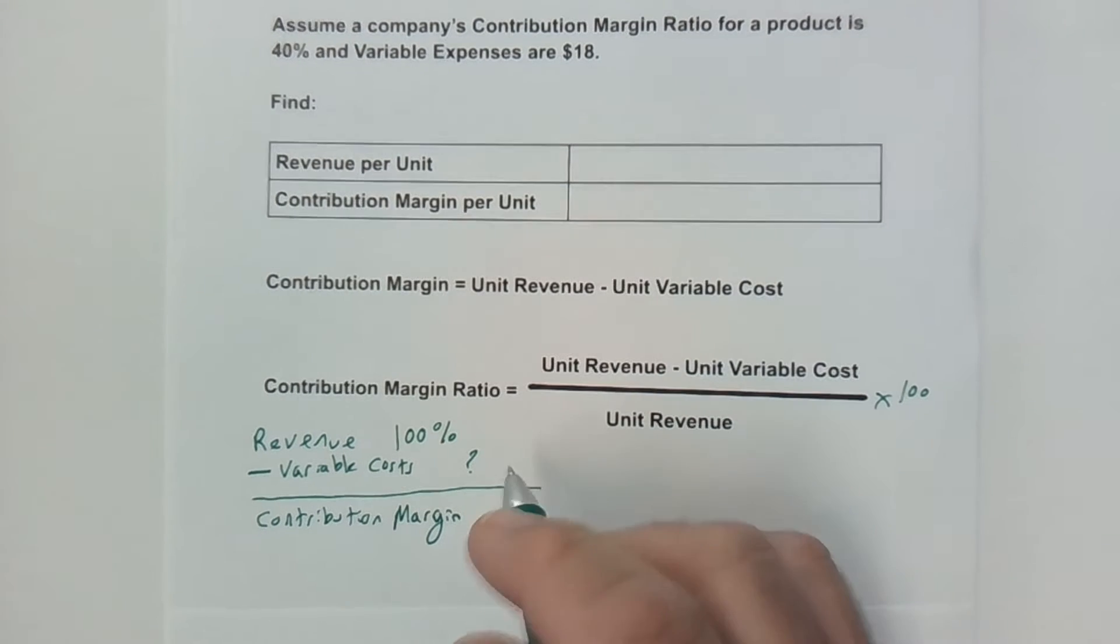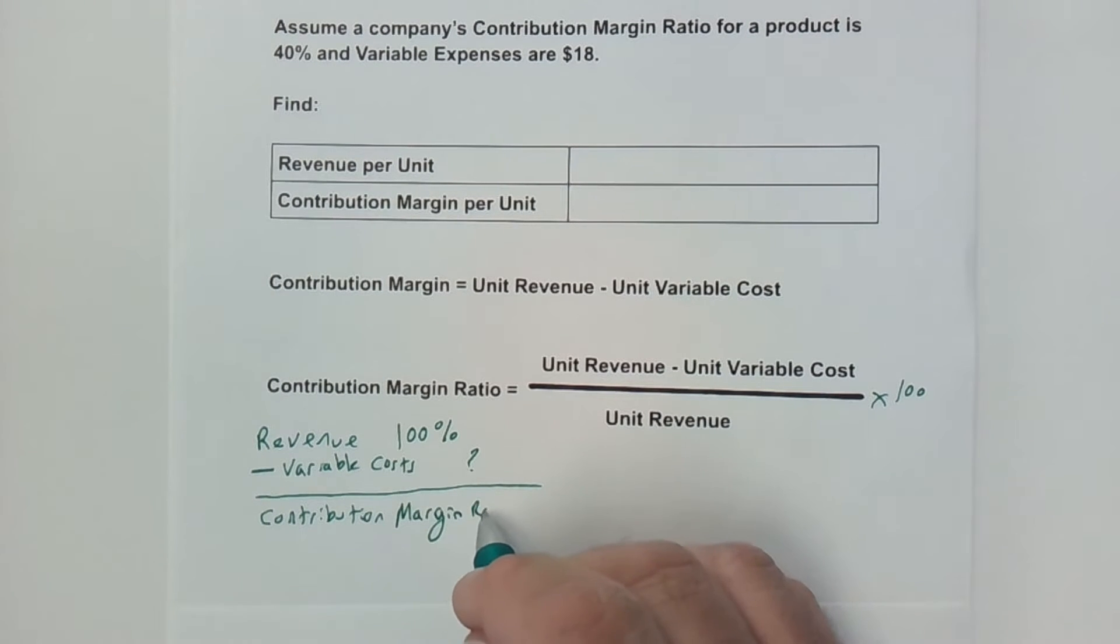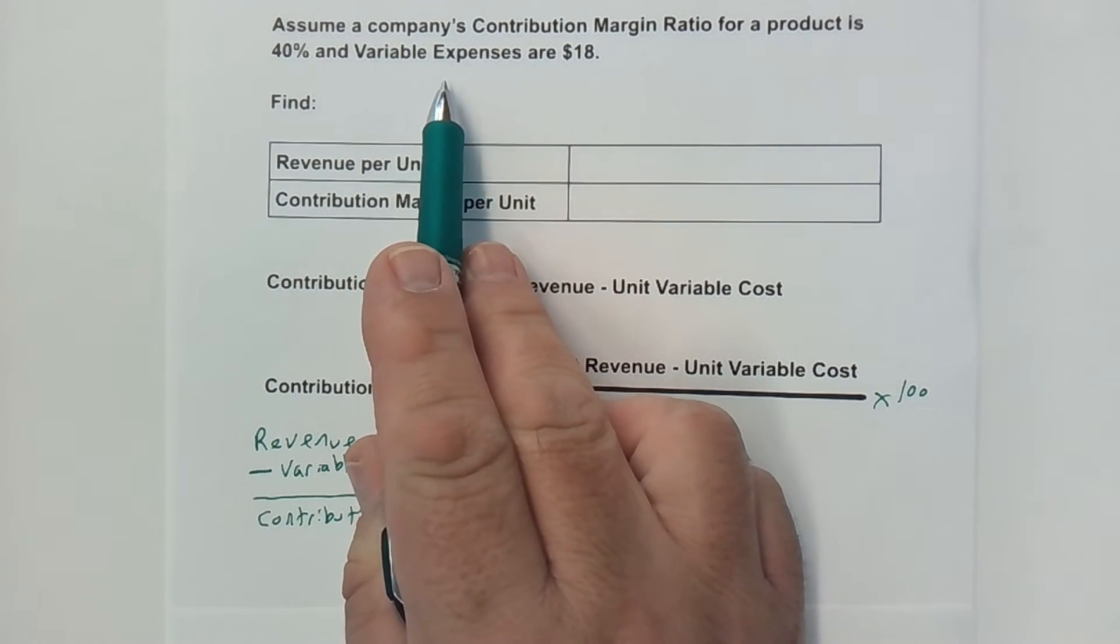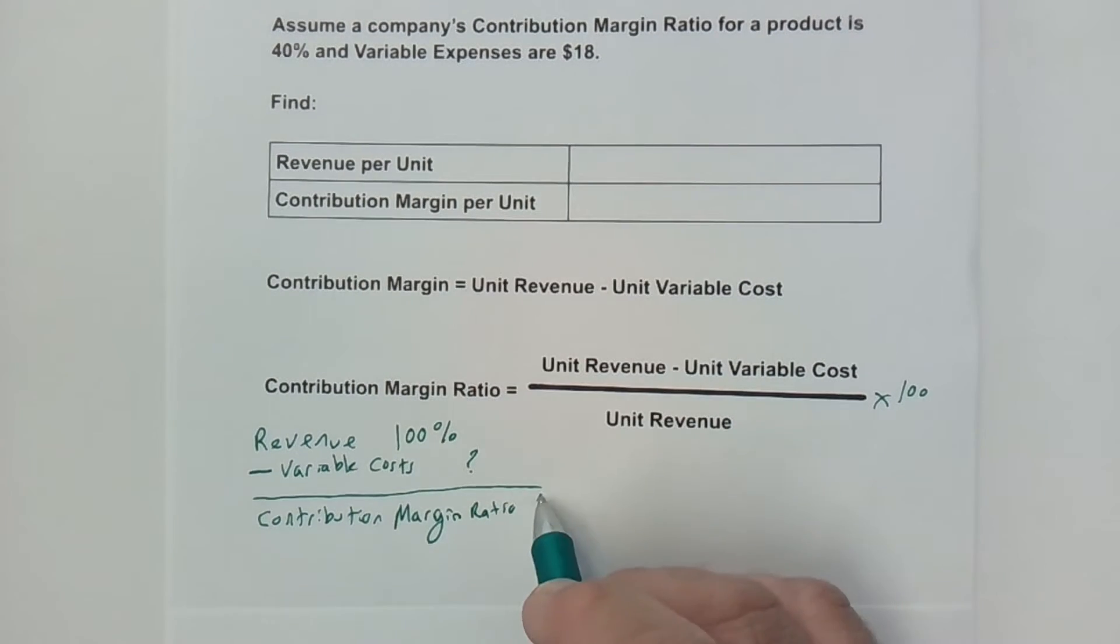The last part is we're left with contribution margin. We're told that the contribution margin ratio is 40%. So it's a simple algebra problem. If we've got 100% is our revenue and our contribution margin is 40%, how much do we subtract out?